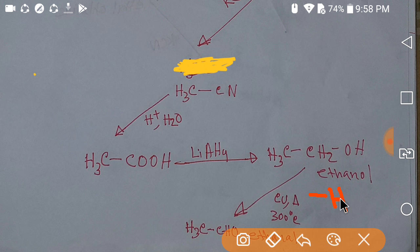If you add a copper catalyst at 300 degrees Celsius, hydrogen is removed from the methanol — that is, dehydrogenation of alcohol — and we get methanal. Thus we can convert ethanal to methanal. Thank you for watching this video.